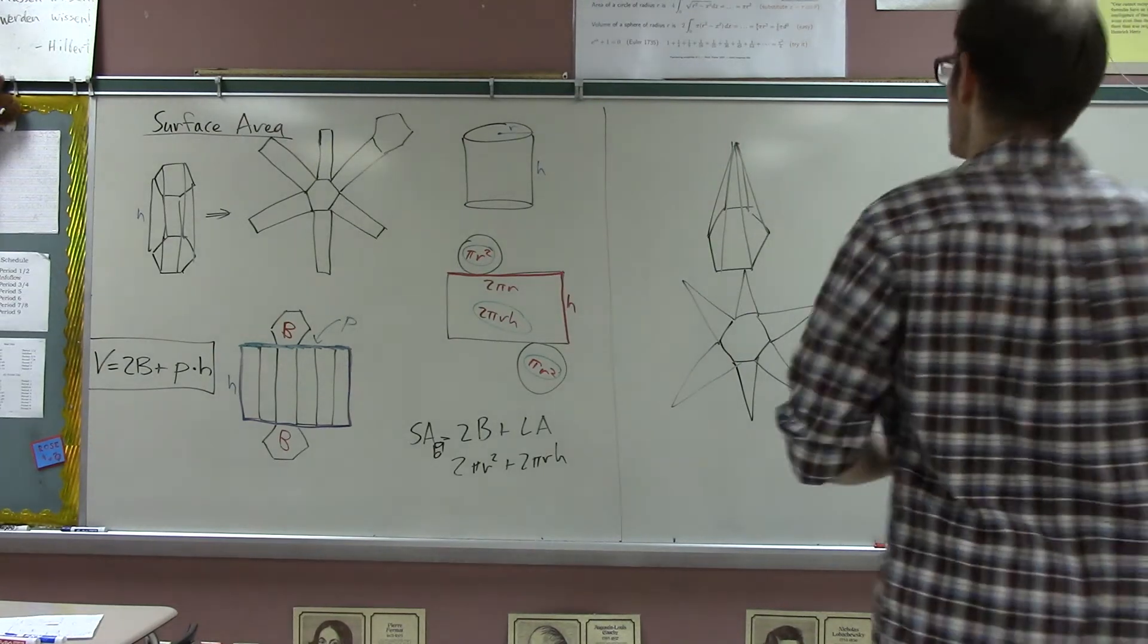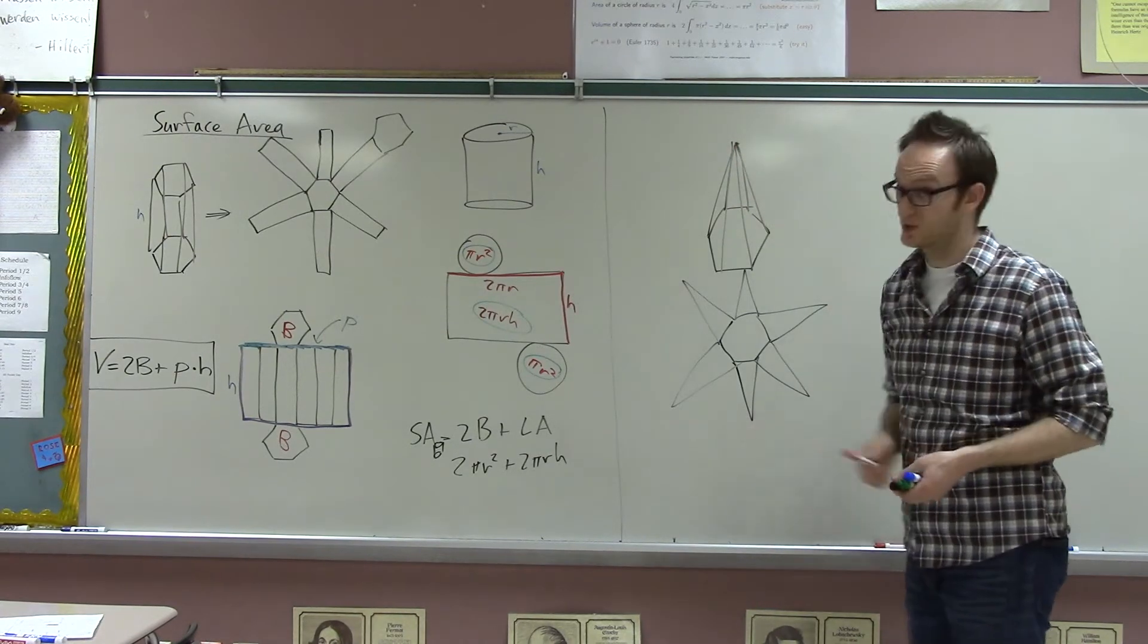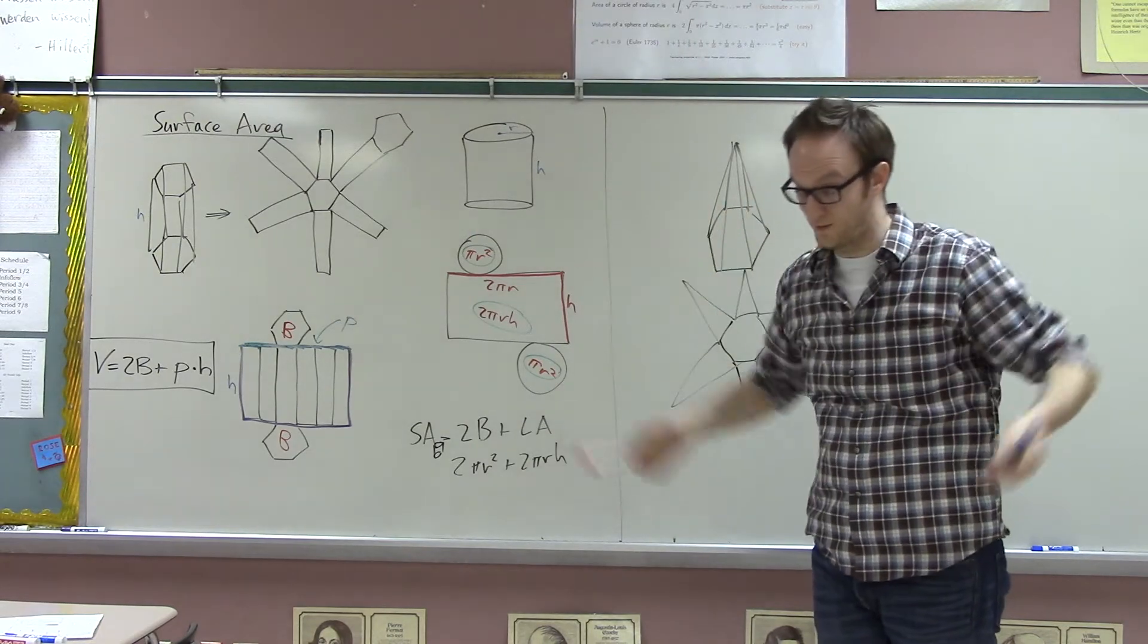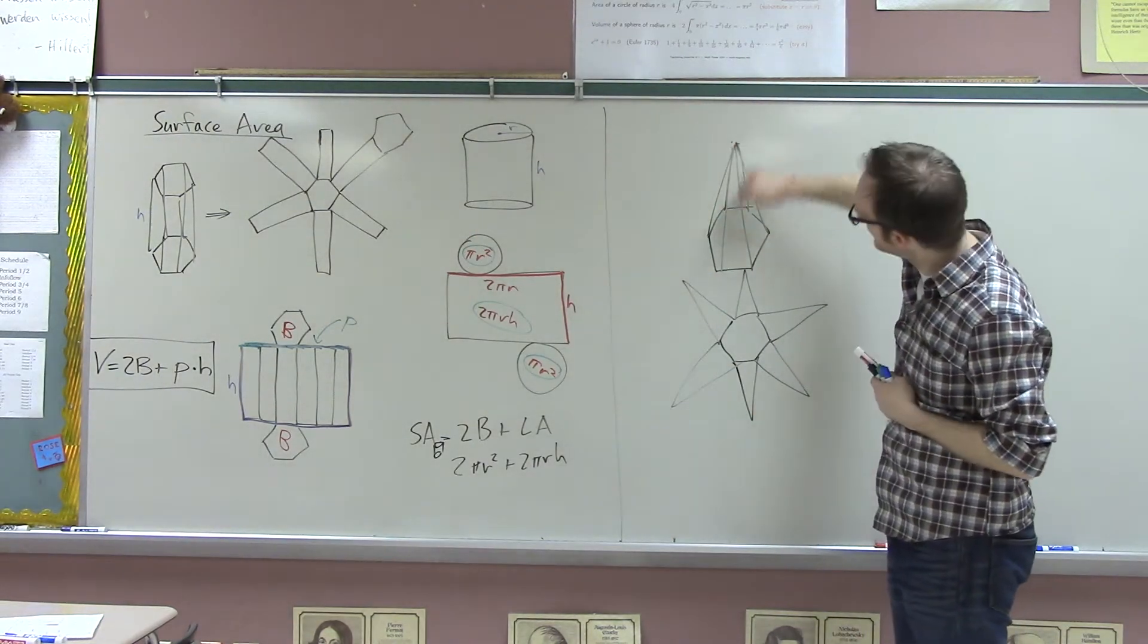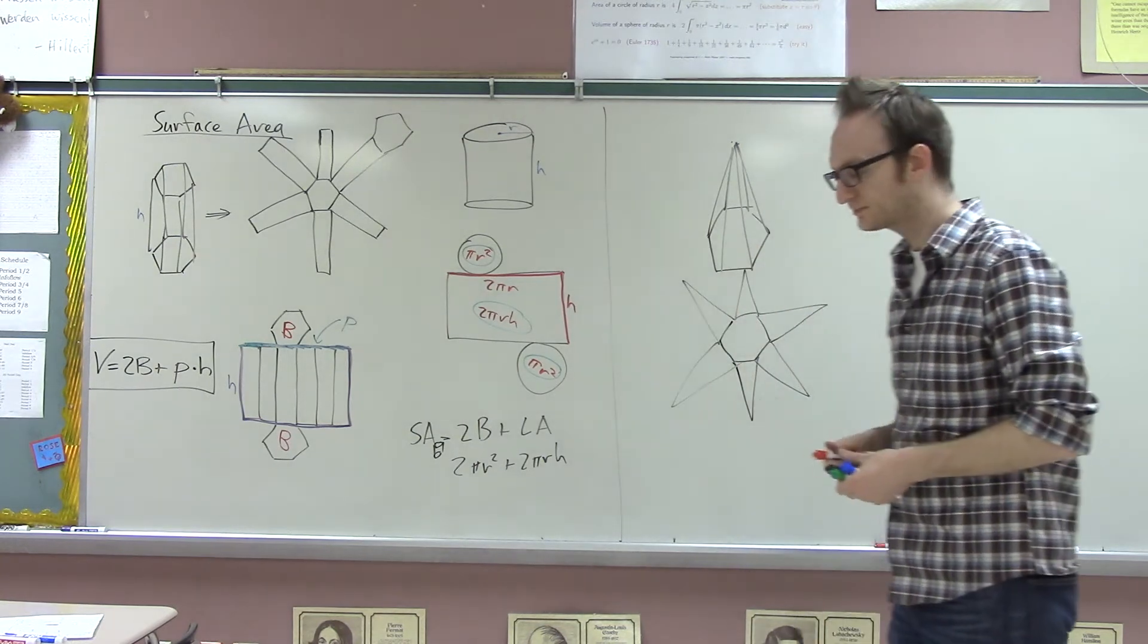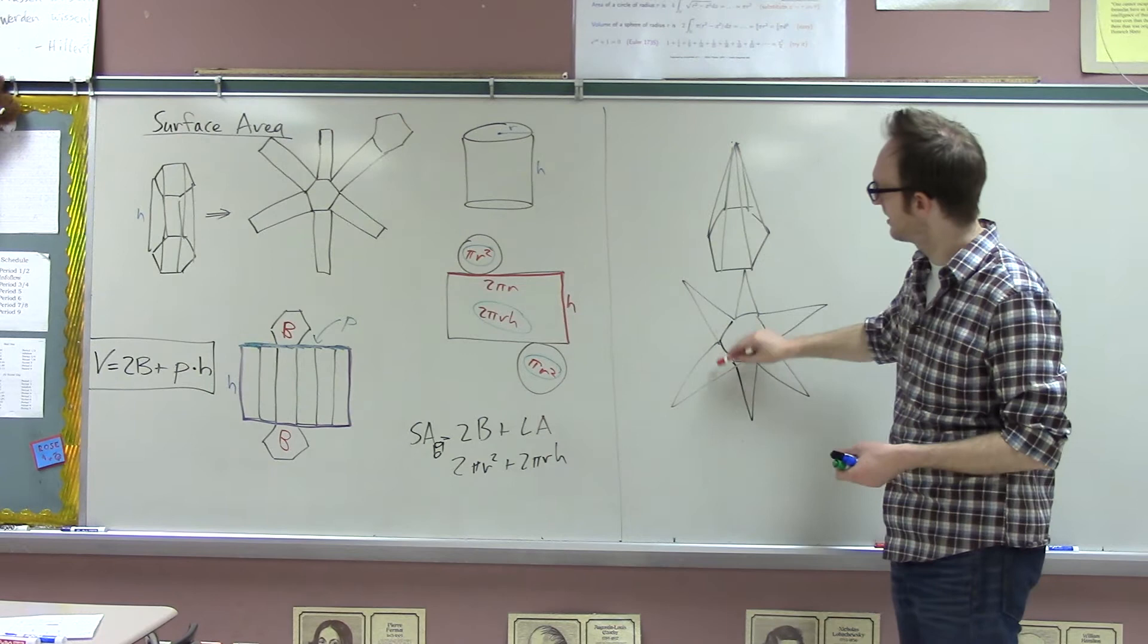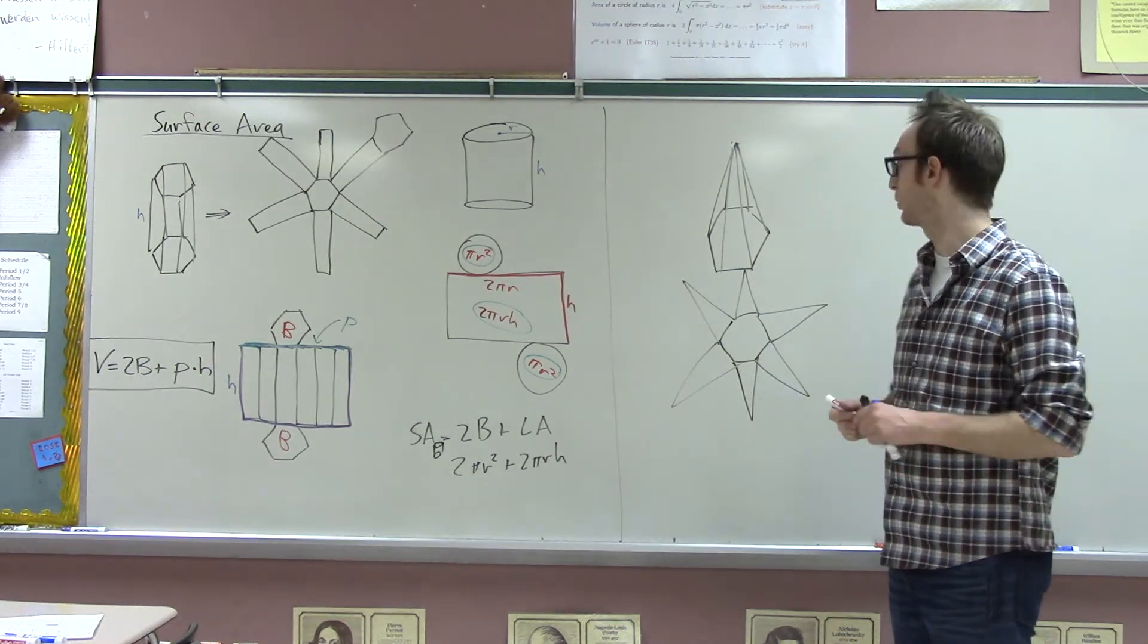And so really the job of finding the surface area of this is just finding the area of all these figures. Well, if it is a regular pyramid, which is about the only kind that we can find the surface area for easily, then that means that this vertex is lying just above the center of the regular polygon, which is part of the definition of a regular pyramid.